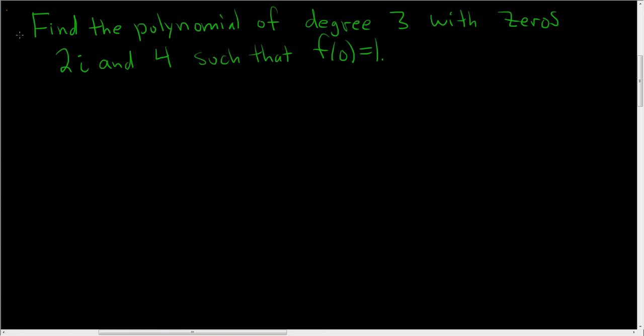We're asked to find the polynomial of degree 3 with zeros 2i and 4 such that f(0) is equal to 1. The first thing we want to do is write down the zeros.